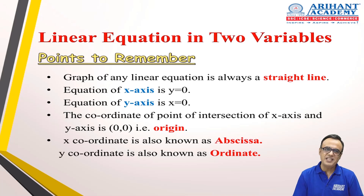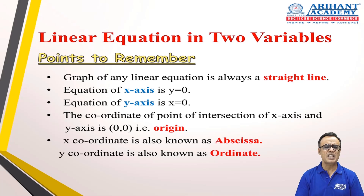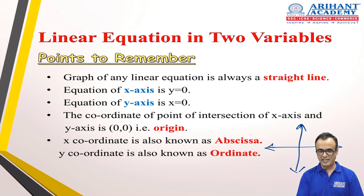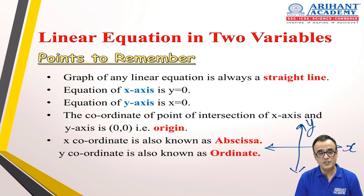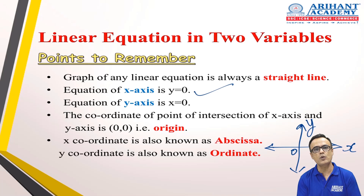Any linear equation in two variables, when put on a graph, will be a straight line. Now let me put up a coordinate system. This is my x-axis and this is my y-axis. Where does the x-axis cut the y-axis? At the origin. Hence, the equation of the x-axis is y = 0, and vice versa, the equation of the y-axis is x = 0. Don't get confused with this.